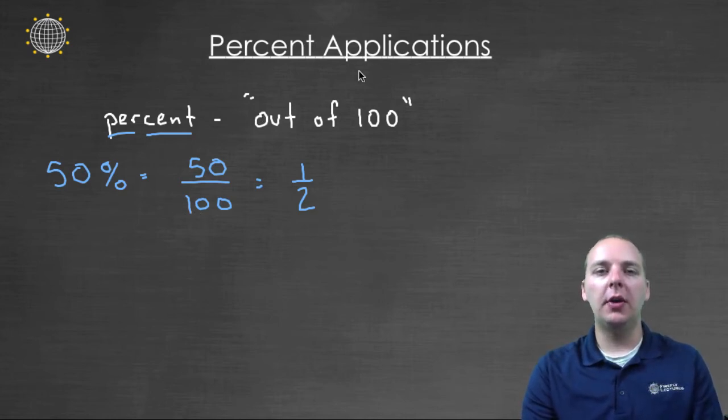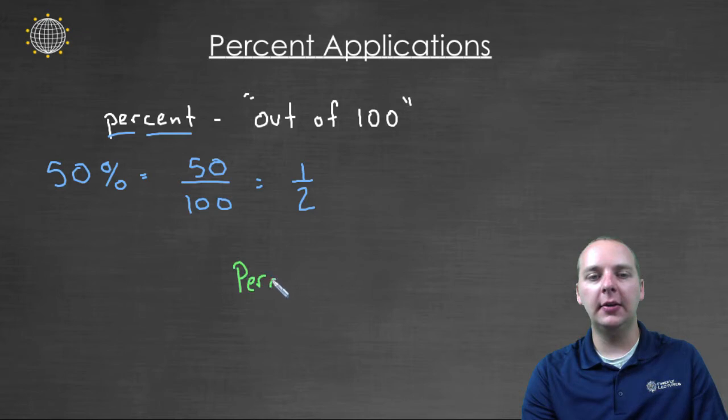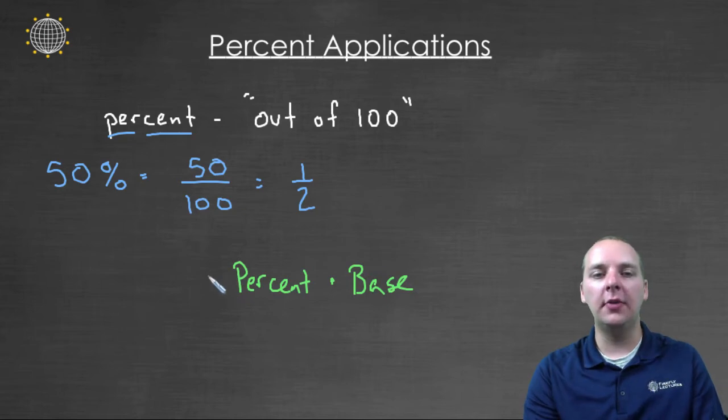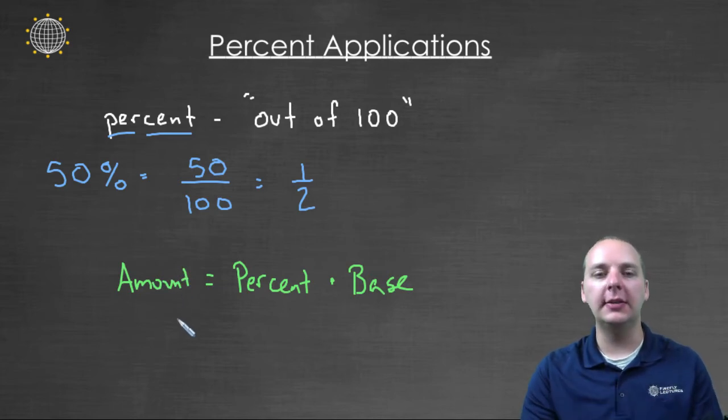Now when we're talking about applications, what we'll usually be doing is taking a percentage of a certain amount. And here's a very helpful equation that can really help. When you take a percent of something, then you're taking a percentage times what we call a base. A base is the thing we're taking the percentage of, and then that's going to give us a new amount. So an amount would be a percentage of some base.